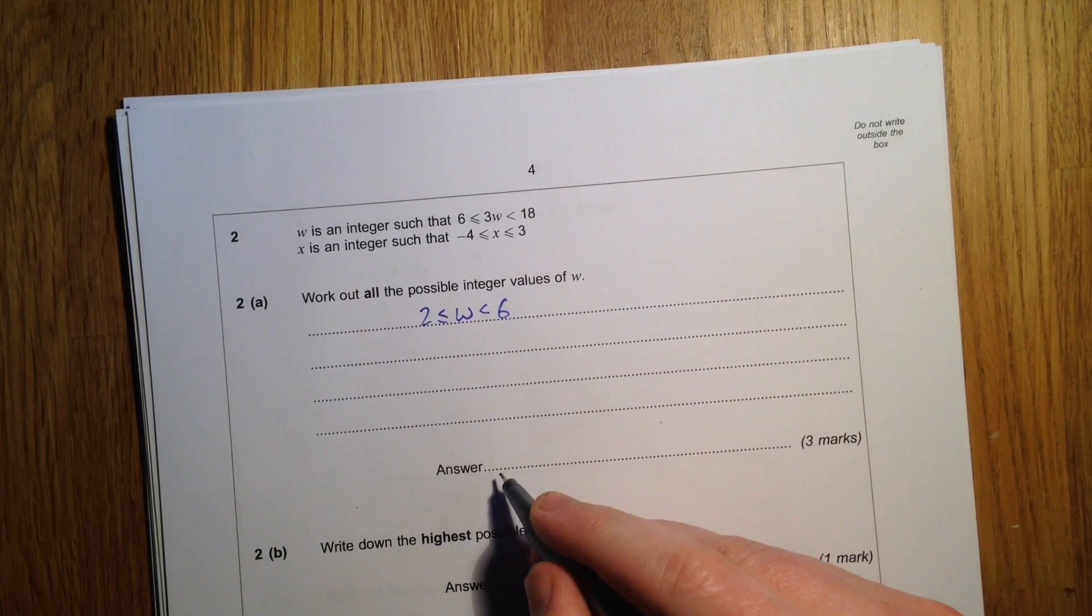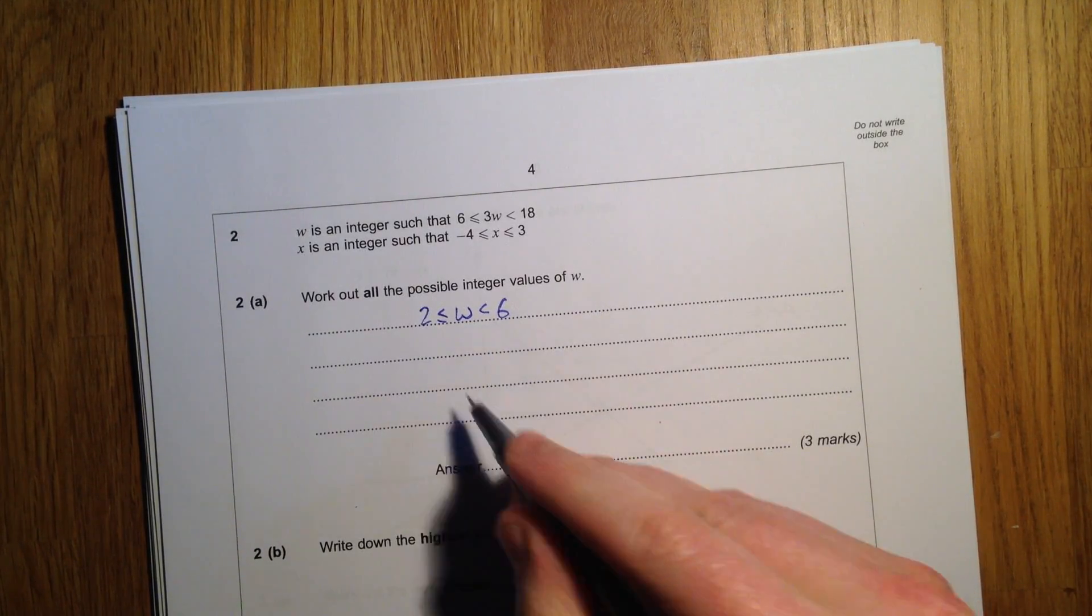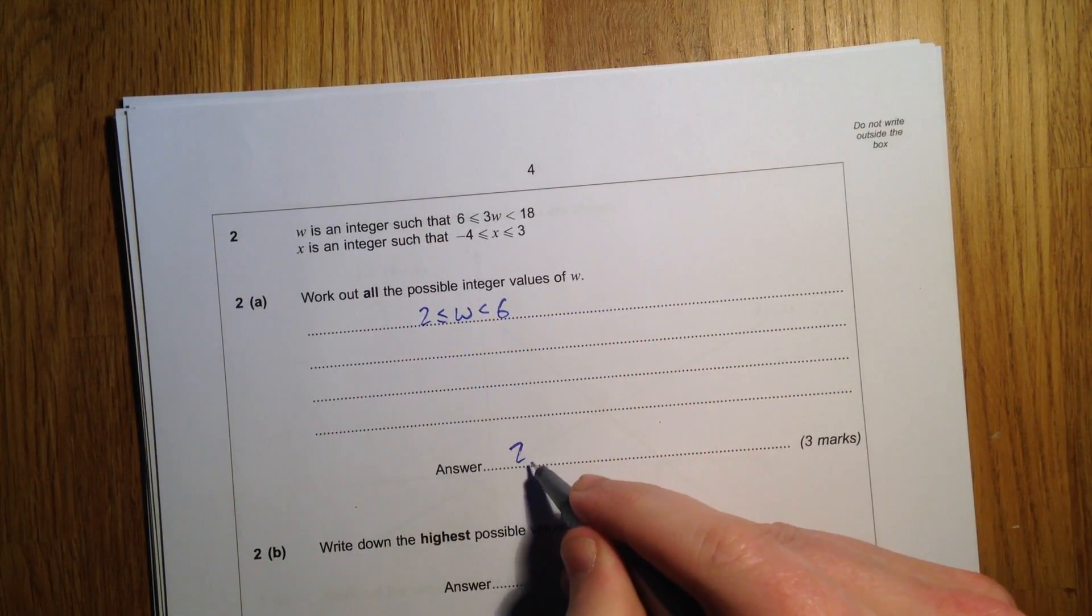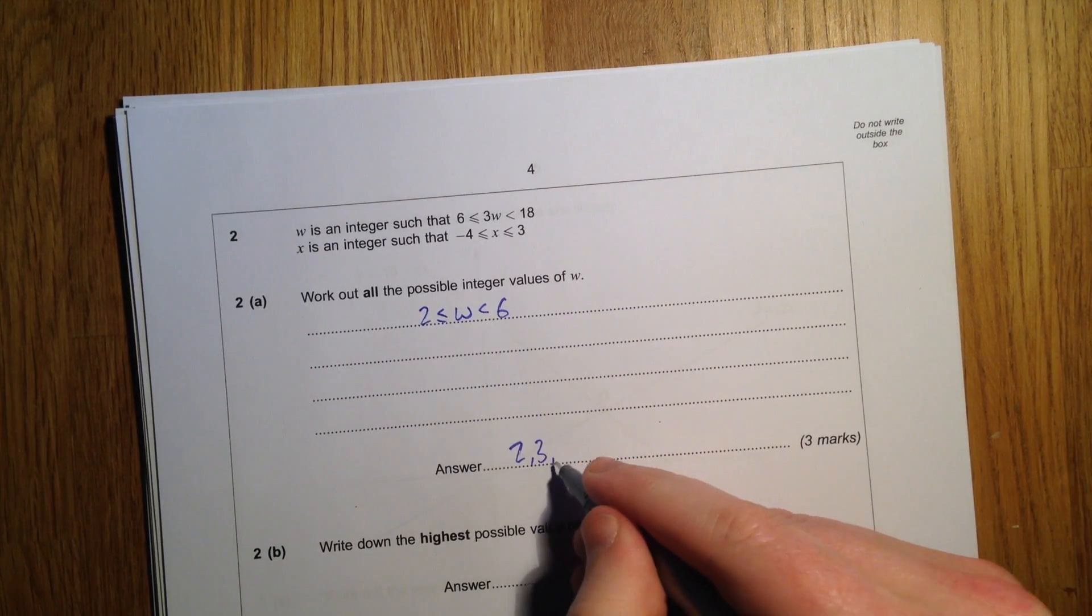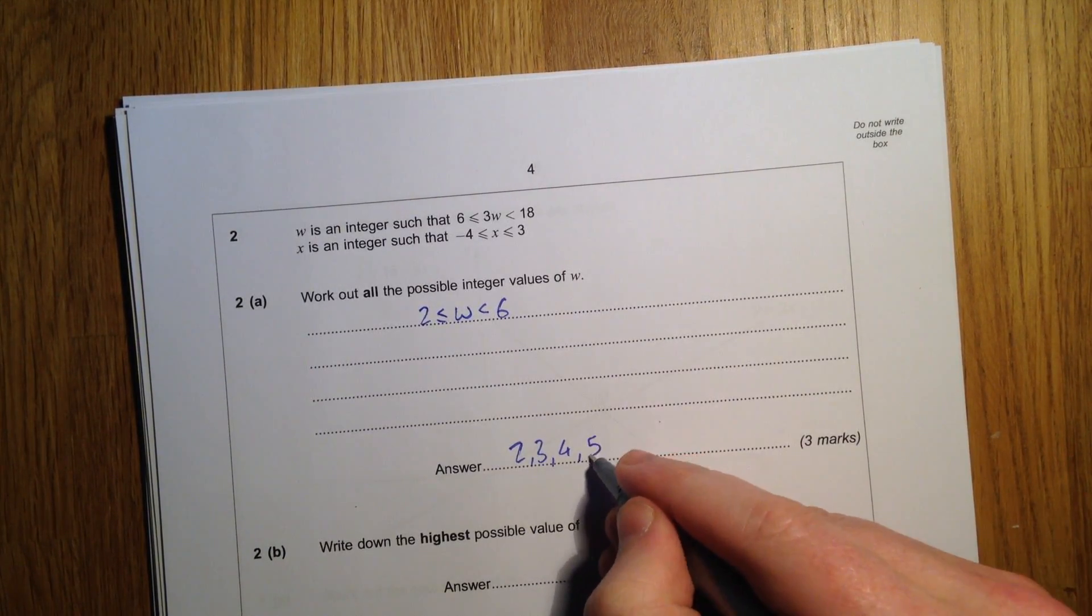So w can be any of the numbers in between 2 and 6, including 2 and not including 6. So 2, 3, 4, and 5.